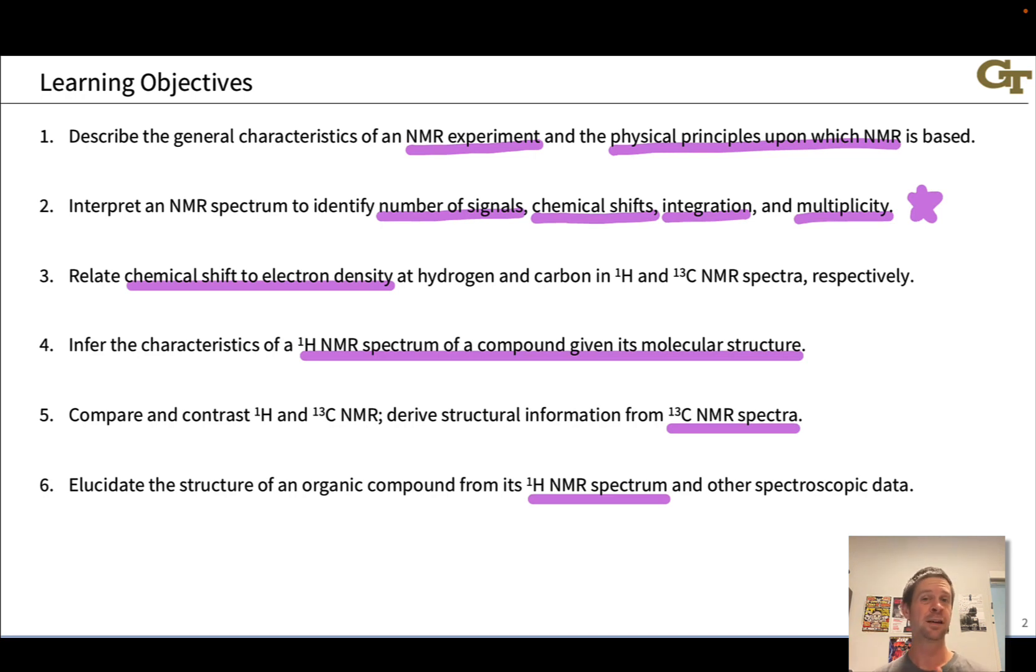We're going to compare and contrast proton and carbon NMR to look at similarities and differences. And then finally we're going to learn how to go from a proton NMR spectrum to an educated guess of the molecular structure using these characteristics: number of signals, their chemical shifts, their integration, and their coupling pattern or multiplicity to generate an educated guess of molecular structure.